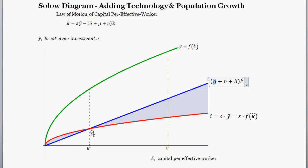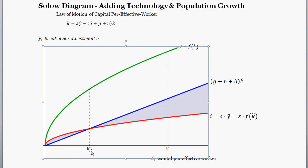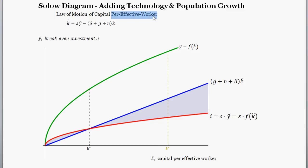What's cool about the diagram is you see basically everything going on with a nice image. The steady state level of capital per effective worker is found where the investment line intersects the break-even investment line. Then, to find output per effective worker at steady state, you go up to the green line at that point. What's confusing is that everything so far is per effective worker — output per worker, investment per worker, and consumption per worker are defined by growth rates and steady state levels, which we'll discuss in another video.